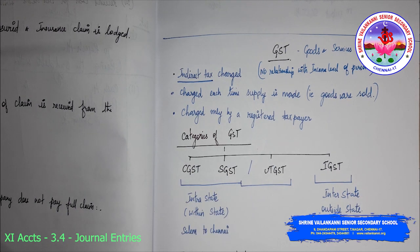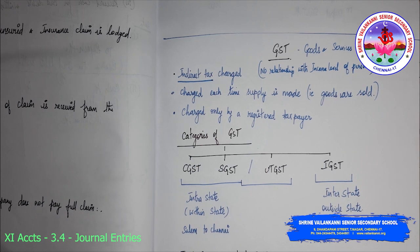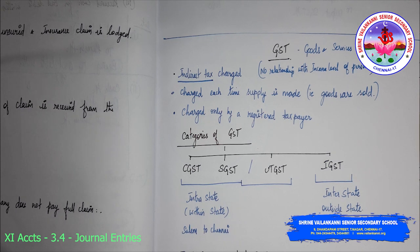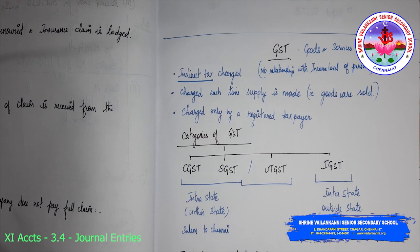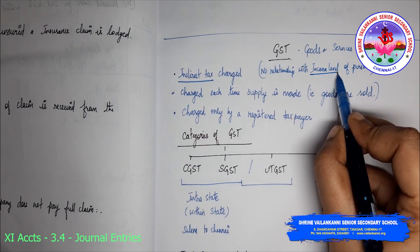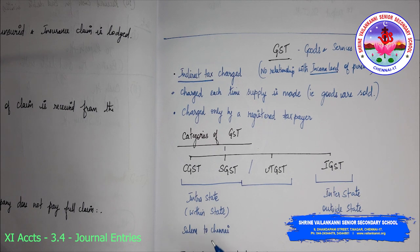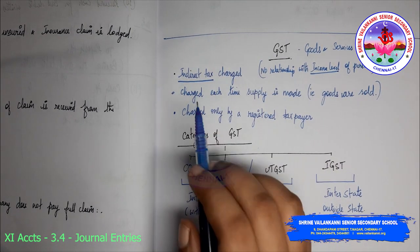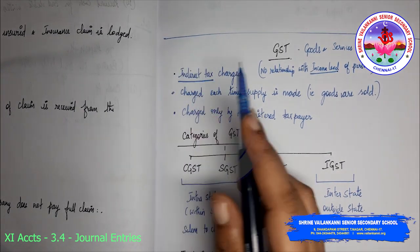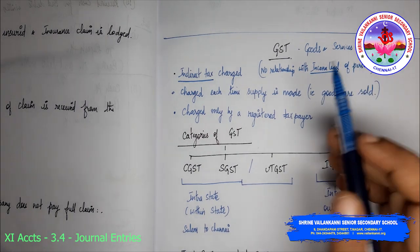If you are consuming or purchasing some goods, then you are supposed to pay GST. If you are getting some services — say for example, you are going to a beauty parlor, having a haircut and hair styling — GST will be charged. This is not related to your income. Even if you have crores and crores of income or no income at all, the tax percentage charged is the same. That is why it is indirectly related to income level — it is an indirect tax.